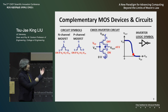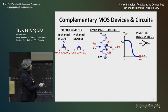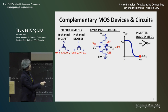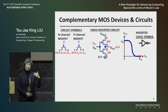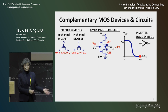Now if we change the input to be high, the N-channel device turns on because now there's a gate-to-source voltage difference. This transistor discharges the output and changes the output voltage to ground, to zero. The more current that this transistor conducts, the faster this circuit operates — this is why we'd like to have high on-state current.